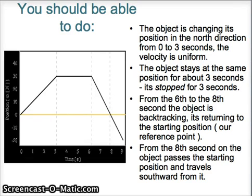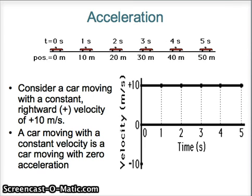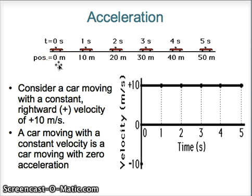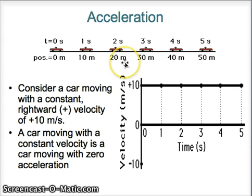This is part two, and we're going to be continuing from this slide, which is at the end of part one, moving on to acceleration. Looking at this previous diagram of a car moving at a constant velocity towards the right in a positive direction, we calculated this velocity to be 10 meters per second. The position went from 0 to 10 in the first second, 10 to 20 in the second, 20 to 30 in the third, making us believe that the velocity is 10 meters per second.